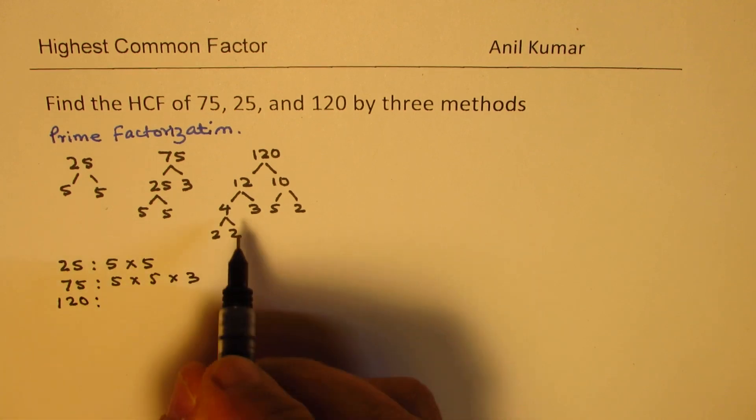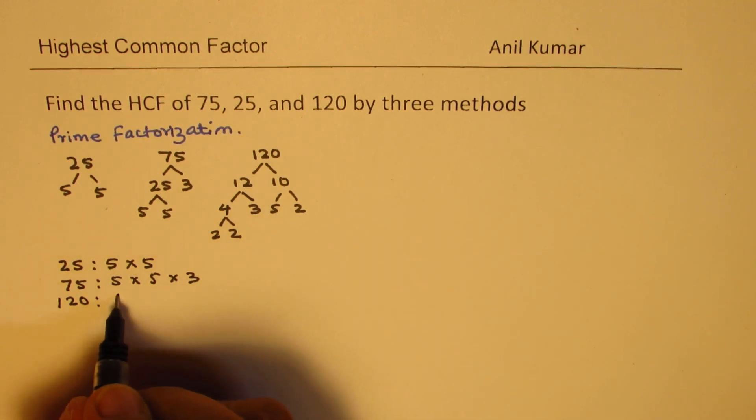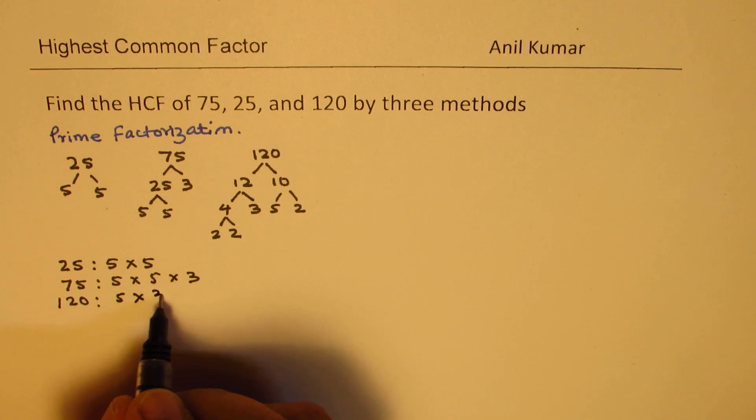For 120, the factors will be, I want to write first 5, 5 times 3 times 2, 2, and 2.